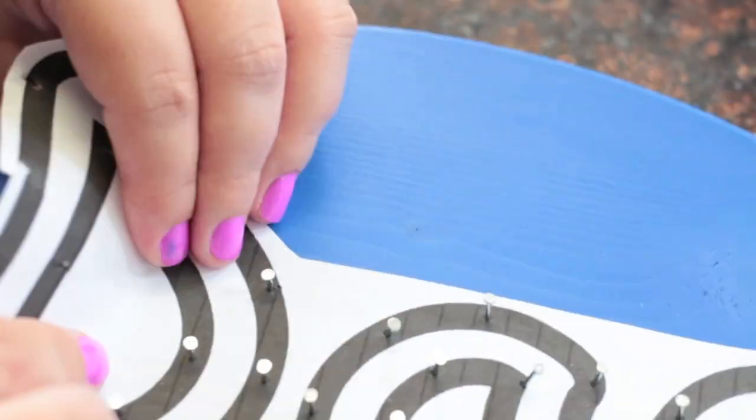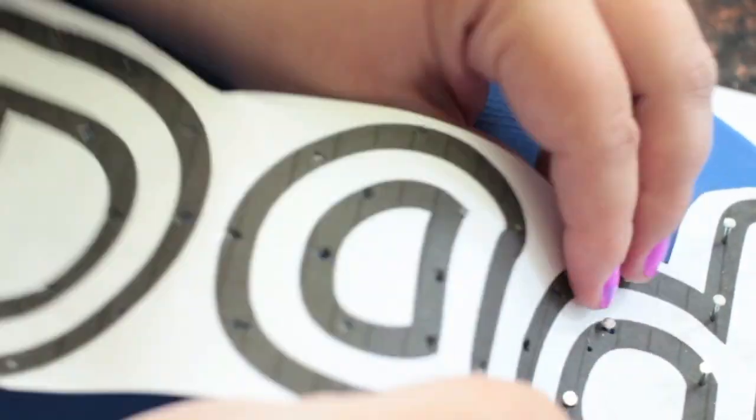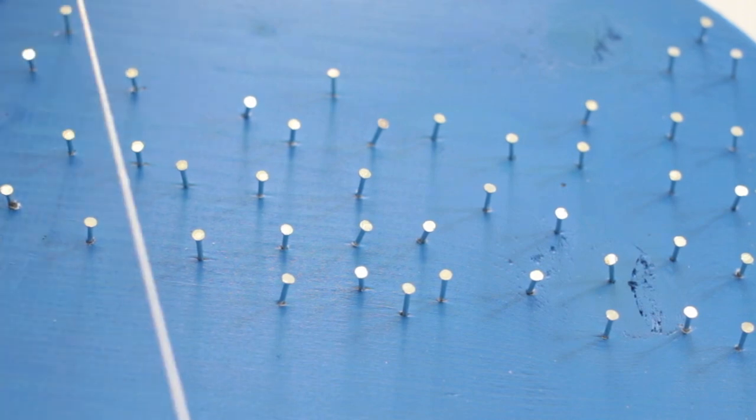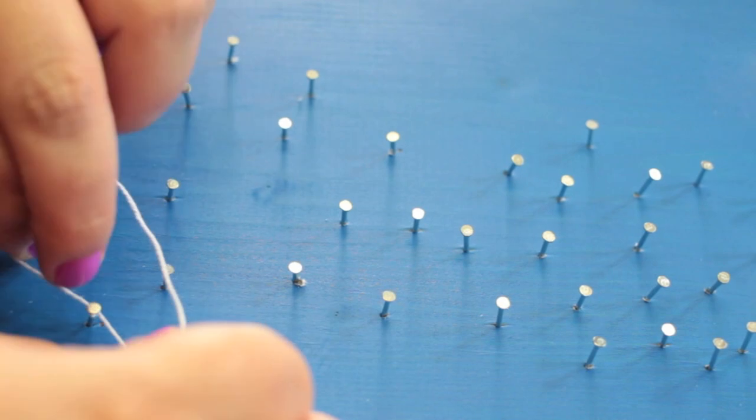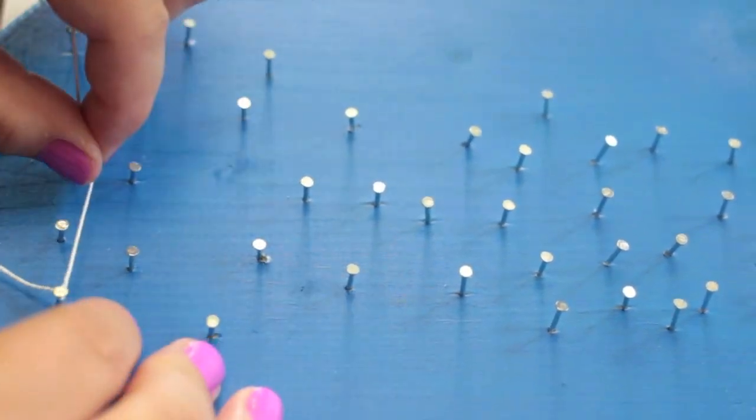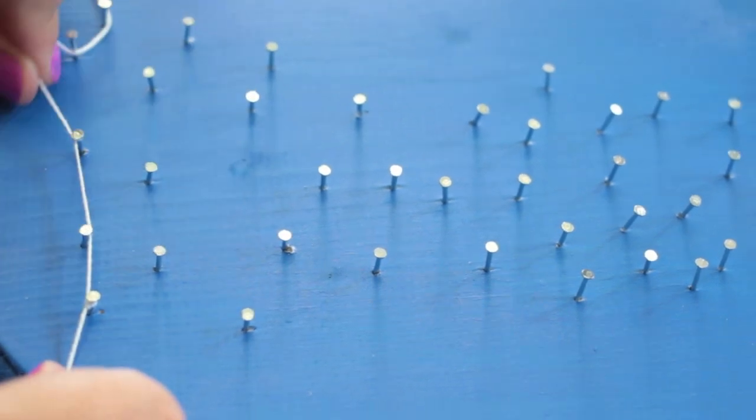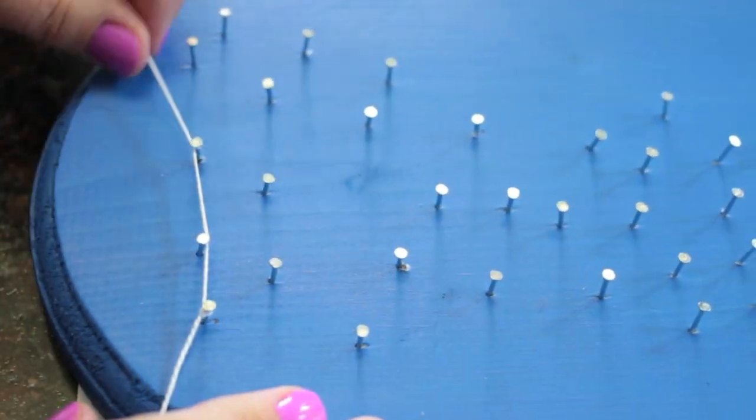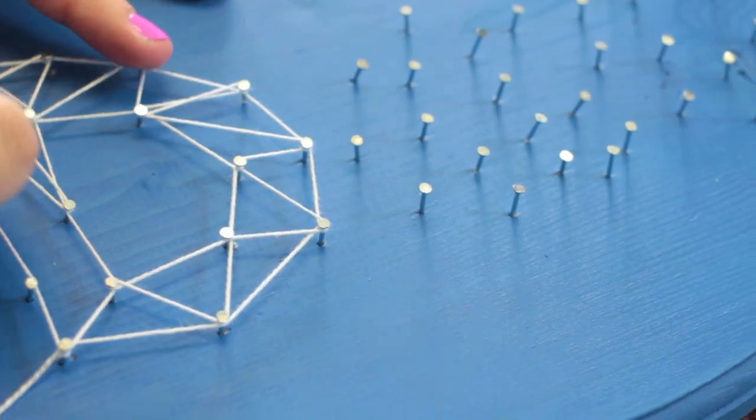When you're done hammering the nails into place that outlined the letters, take the paper out that you nailed down from under the nails. Take your embroidery floss, you can also use twine or yarn, and make a double knot to tie to the nail that you want to start on. Then start winding the floss around each letter, keeping in mind how the letters look on the paper so that the letter you're working on doesn't come out looking funny.